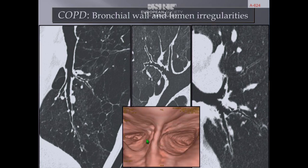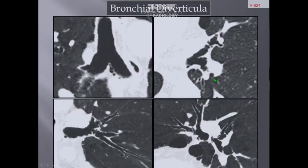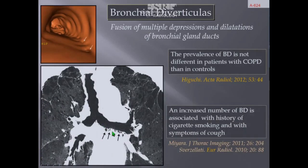Virtual endoscopy reveals thickening of the bronchial spurs and irregularity of the inner surface of the airways, including the typical accordion-like appearance previously described in classical bronchography, characteristic of chronic bronchitis. Additionally, using minimum intensity projection, we can easily detect bronchial diverticula — air collections visible in the walls of the proximal bronchi, main stem bronchi, lobar bronchi, and segmental bronchi. These air collections represent the fusion of multiple dilatations of bronchial gland ducts, and an increased number of bronchial diverticula is associated with history of cigarette smoking and symptoms of cough.